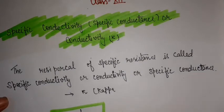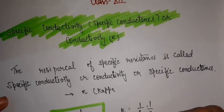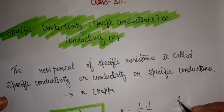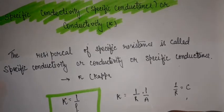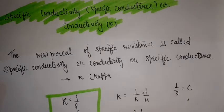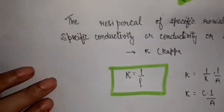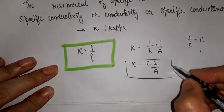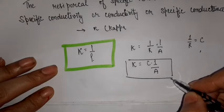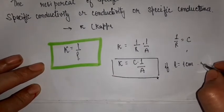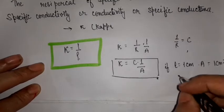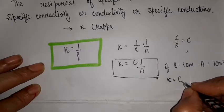We have rho equal to resistivity, so kappa equals 1 upon R multiplied by L upon A. If we take 1 upon R equal to C, then kappa equals C multiplied by L upon A. If L is 1 centimeter and area equals 1 centimeter square, then kappa equals C.